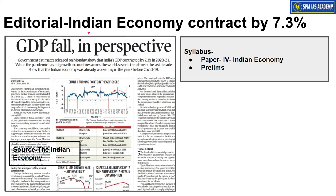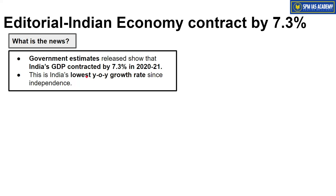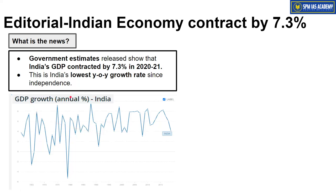The first article is taken from the editorial segment. It is about Indian economy contracting by 7.3% in fiscal year 2020-21, and this topic is important from the Indian economy syllabus paper. According to recently released government estimates, India's GDP has contracted by 7.3%. This means that compared to 2019-20, the monetary value of goods and services produced in 2020-21 is 7.3% less — a negative growth rate. This is India's lowest year-on-year growth rate since independence.